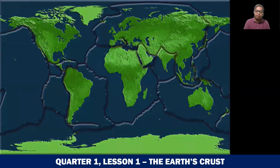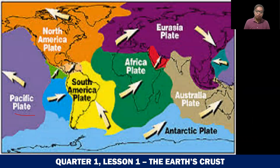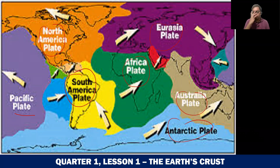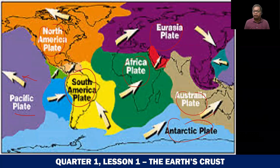We have different plates. Here are the major plates: the Pacific plate, the North America plate, and the South America plate. Usually, the name depends on the continent or place where the plate is found. For example, the North America plate has the continent of North America above it. We also have the African plate, the Eurasian plate — where we are found — the Australian plate, and the Antarctic plate. There are also minor plates, which we will not discuss in this video. The arrows on the map show the movement of each plate. For example, the Pacific plate is moving westward and the Australian plate is moving northeastward.